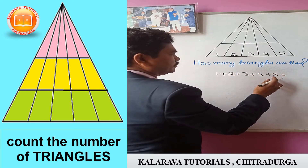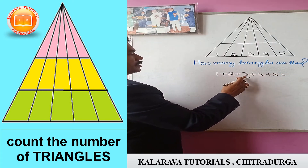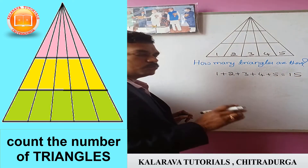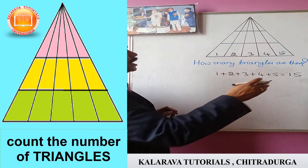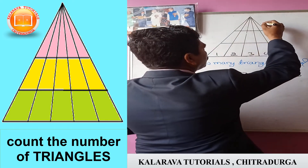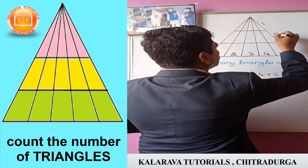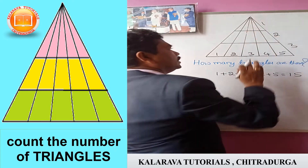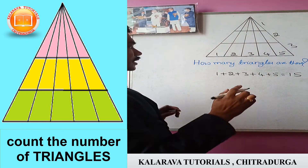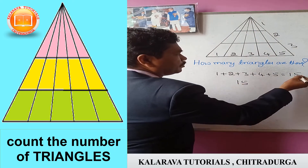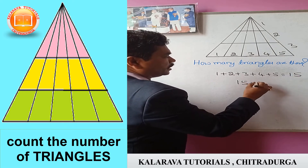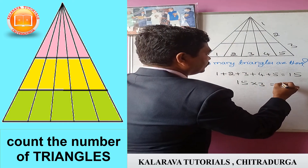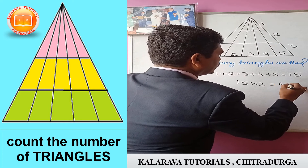That gives you: 5 plus 4 is 9, 9 plus 3 is 12, 12 plus 2 is 14, 14 plus 1 is 15. You put this 15 and count the number of parts here: 1, 2, 3 — there are 3 parts. You have to multiply 15 by 3, that is the number of parts. 15 into 3 gives you 45.